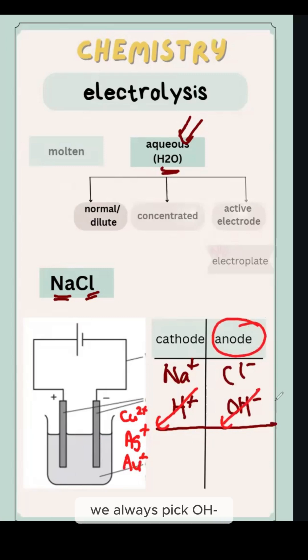For anode, we always pick hydroxide. We don't pick hydroxide if it is concentrated situation, which we will learn later.